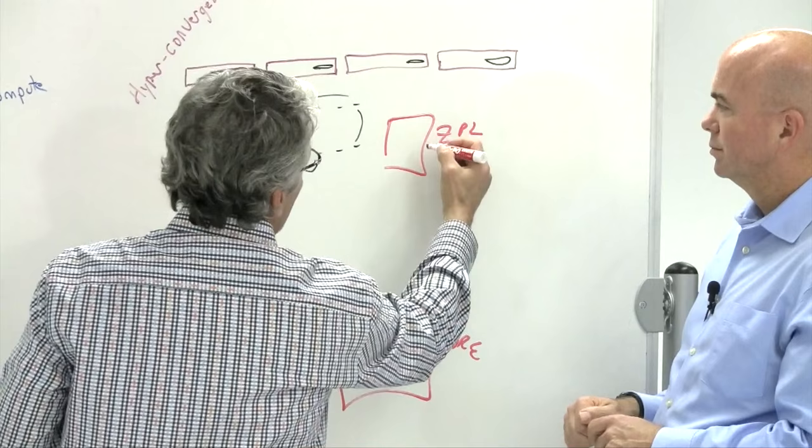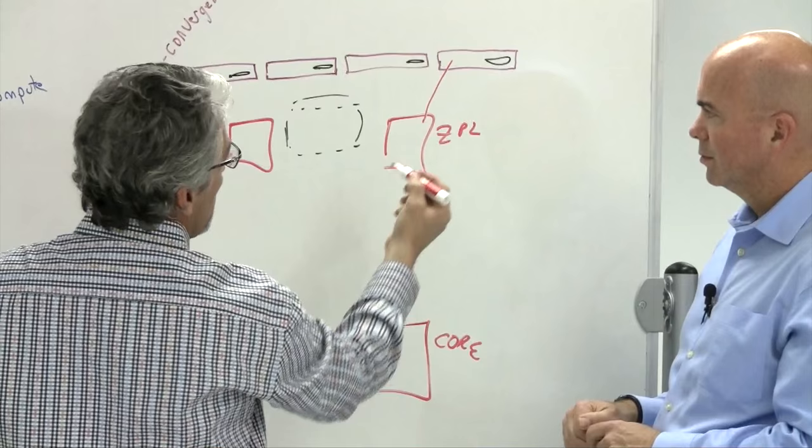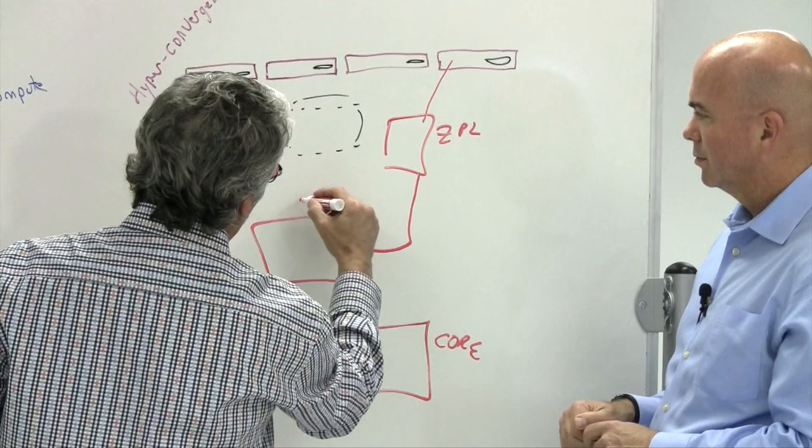And then these are just passive patch panels. And then your 10 gig links would run from your nodes to your patch panel. This would already be trunked up to a central patching location.